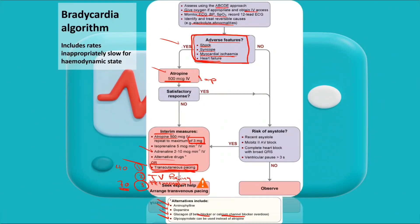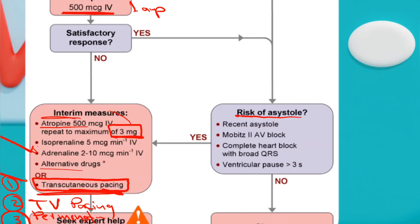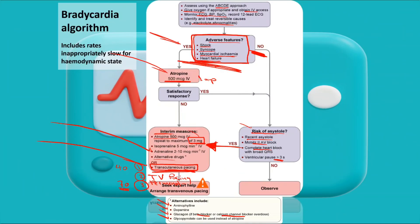To summarize: if a patient has one or more adverse features, give atropine. If atropine up to three milligrams is not effective, give adrenaline as an interim measure, then proceed to pacing. If the patient has no adverse features, assess the risk of asystole. Risk factors include: Mobitz type 2 AV block, complete AV block, ventricular pauses more than three seconds on ECG, or recent cardiac arrest. If asystole risk is present, proceed to interim measures. If no adverse features and no asystole risk, observe or refer to cardiology.